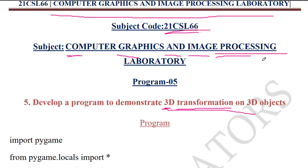Next, let's look at the description of the program. In Program 5 of course 21CSL66, we will learn how to apply different types of 3D transformations including translation, rotation, and scaling to 3D objects. These transformations are fundamental operations that enable us to move, orient, and resize objects in three-dimensional space.